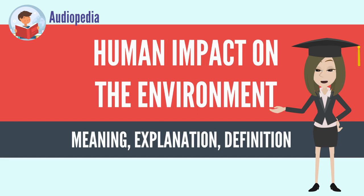The term anthropogenic designates an effect or object resulting from human activity. The term was first used in the technical sense by Russian geologist Alexei Pavlov, and it was first used in English by British ecologist Arthur Tansley in reference to human influences on climax plant communities. The atmospheric scientist Paul Crutzen introduced the term Anthropocene in the mid-1970s. The term is sometimes used in the context of pollution emissions produced from human activity, but also applies broadly to all major human impacts on the environment.